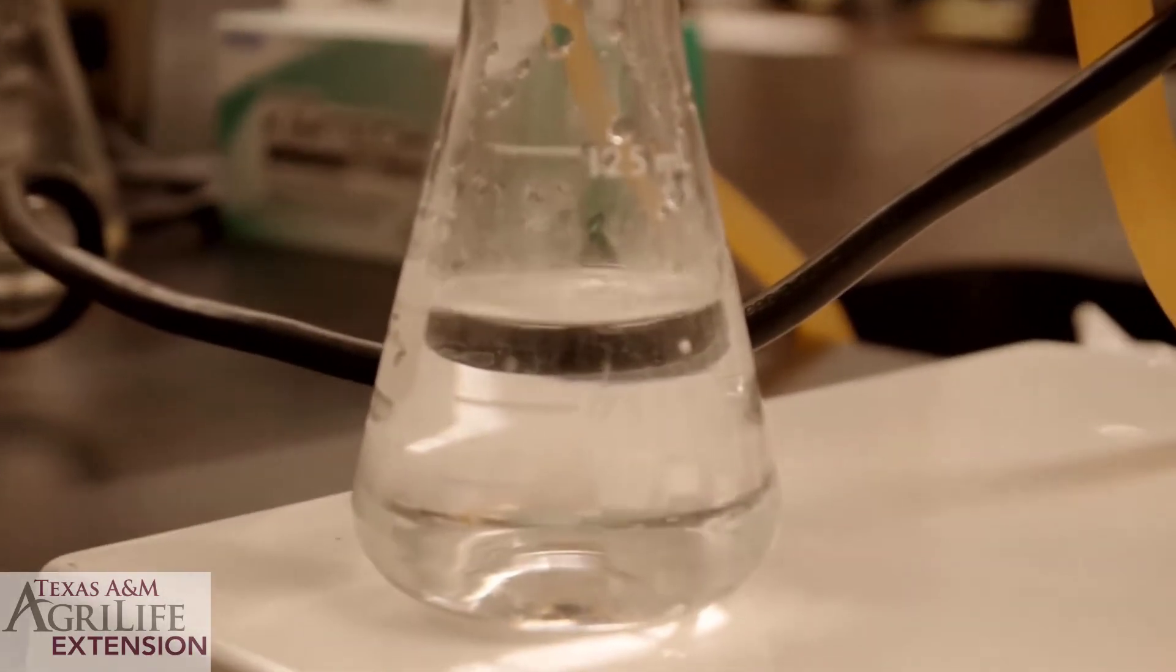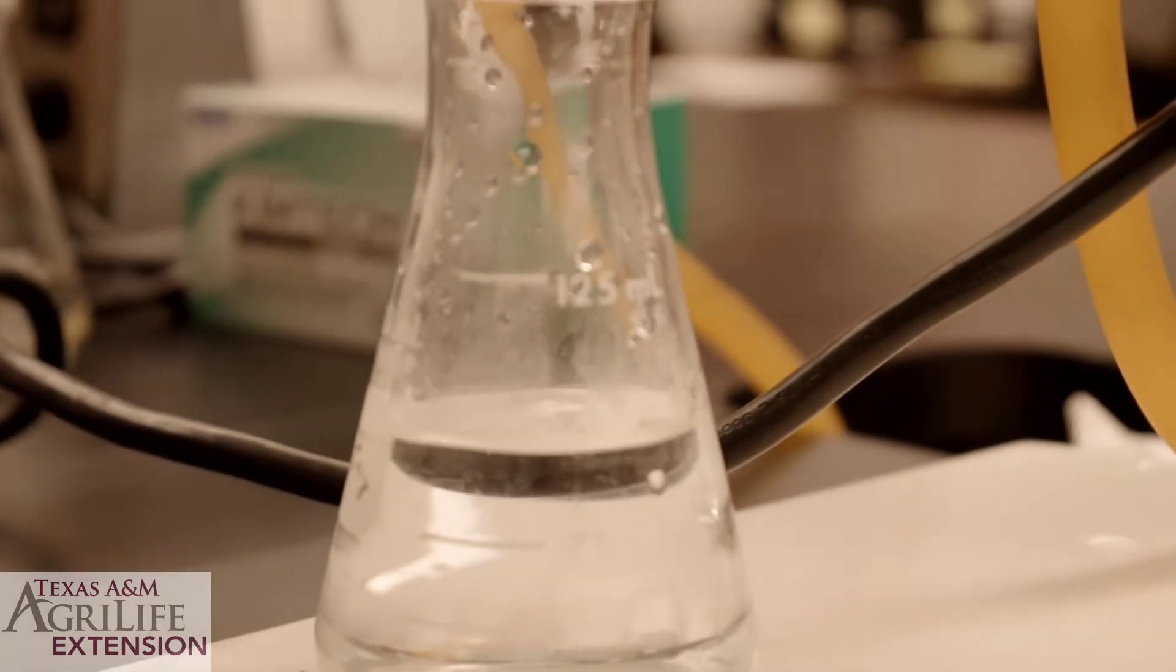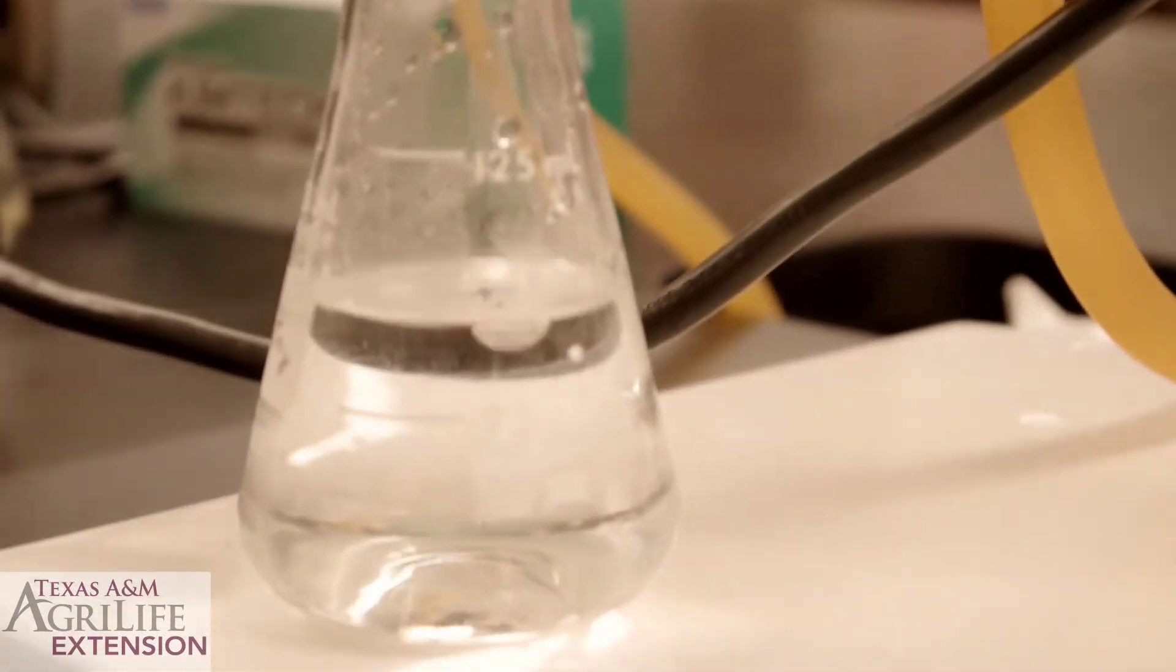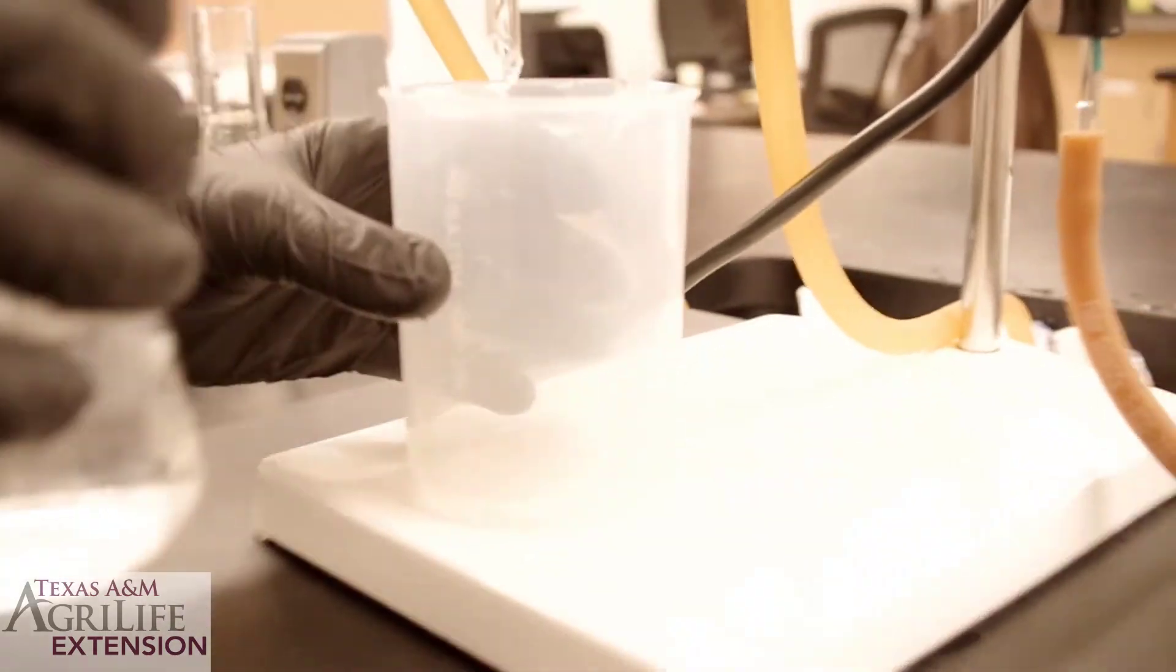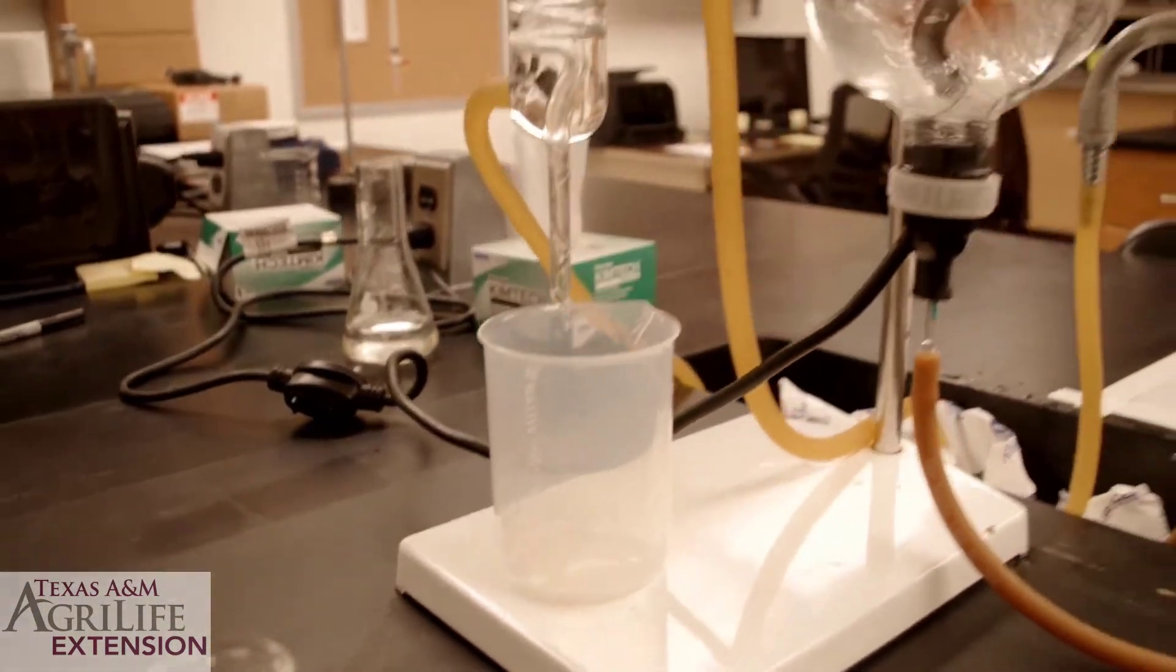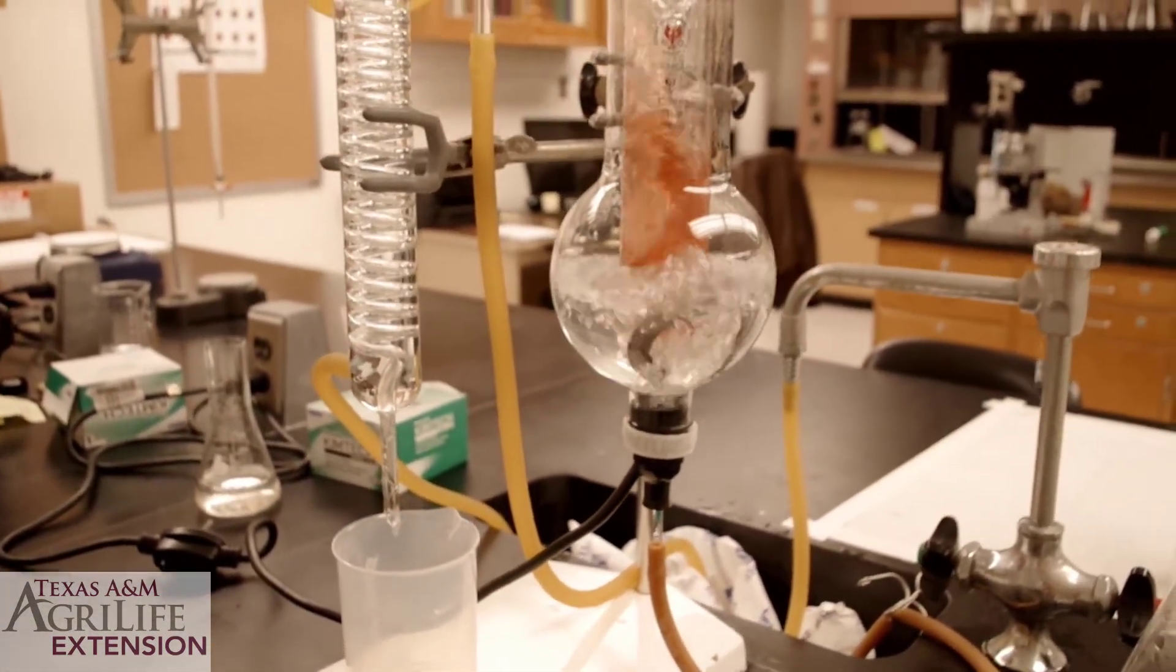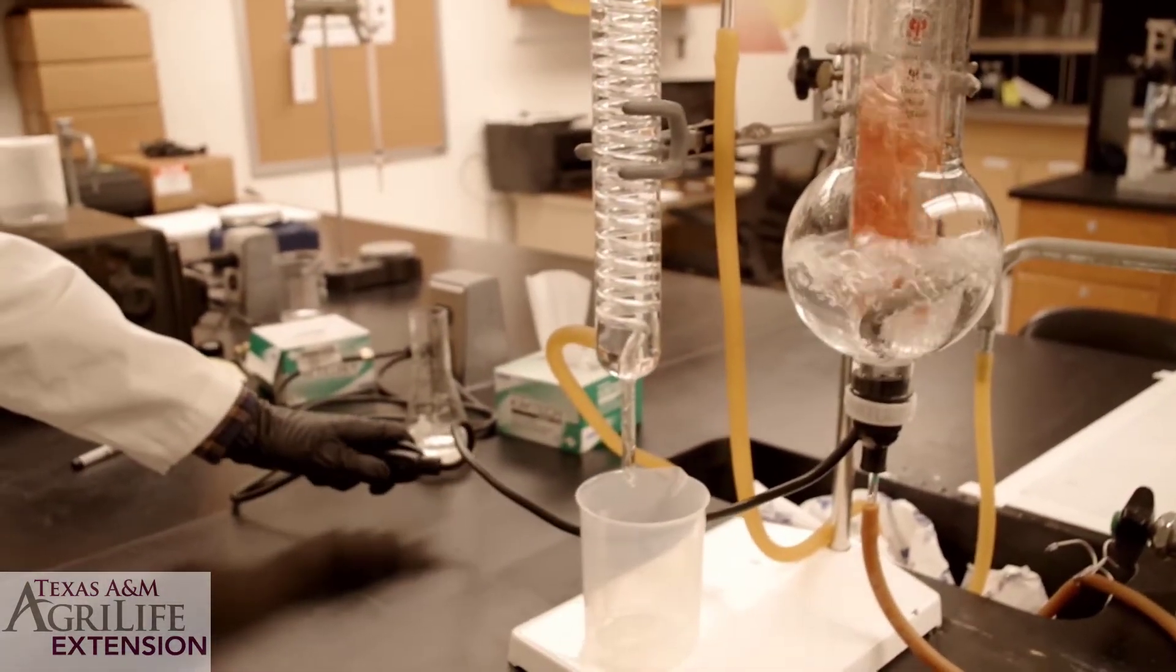Collect 100 milliliters of your distillate. Replace your collecting flask with a waste container. Then turn off your machine.